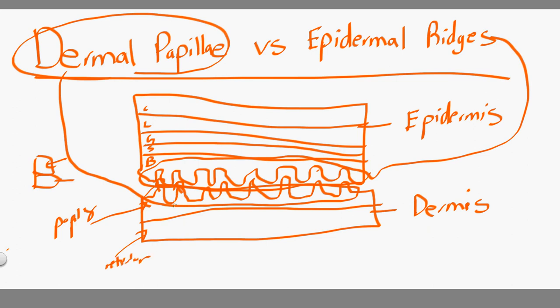The dermal papillae are in the papillary layer, and the epidermal ridges are in the stratum basal, the last layer there of the epidermis. So they're both the same thing. They're both the egg crate things that fit into each other, but the epidermal ridges are in the epidermis, the dermal papillae are in the dermis, and it fits right in like a jigsaw puzzle.